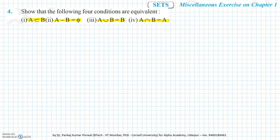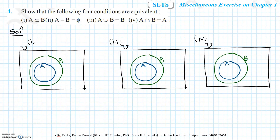Like most questions, there are two ways to show that these four conditions are equivalent. The first one is through a Venn diagram. If I draw the Venn diagram corresponding to the first condition — A is a subset of B — then the circle corresponding to set A will lie completely inside the circle corresponding to B.